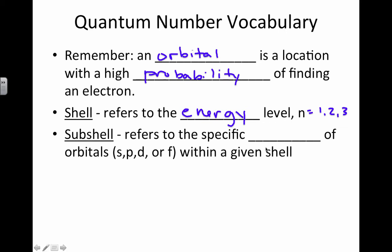Then the subshell refers to the specific type of orbital, whether it's S, P, D, or F types within a given shell. So you can have, in the third energy level, you can have a 3s, you can have a 3p, or you could have a 3d. Those are the types that we could have in energy level 3.